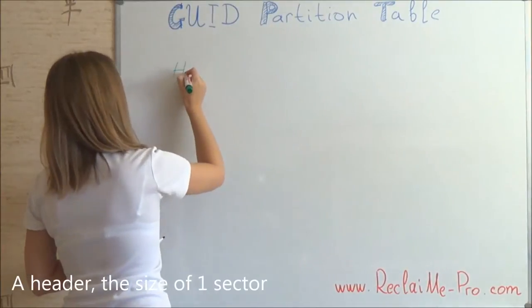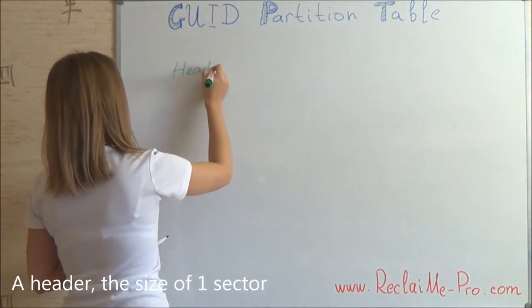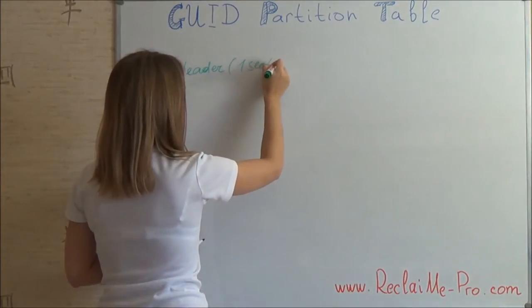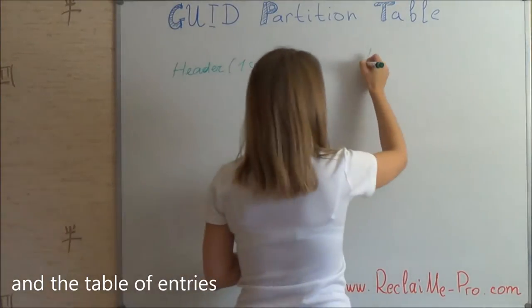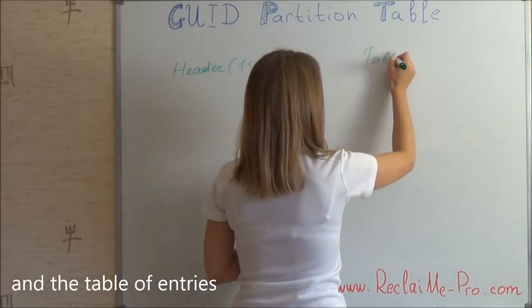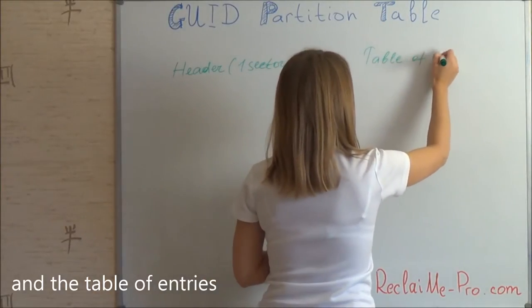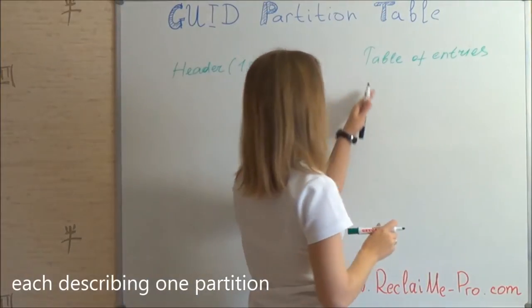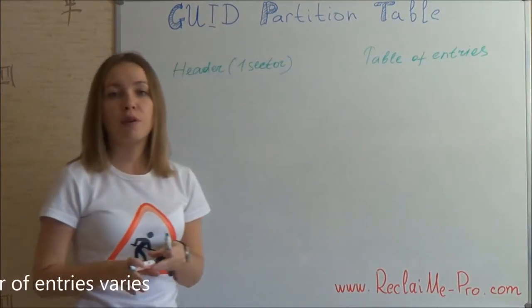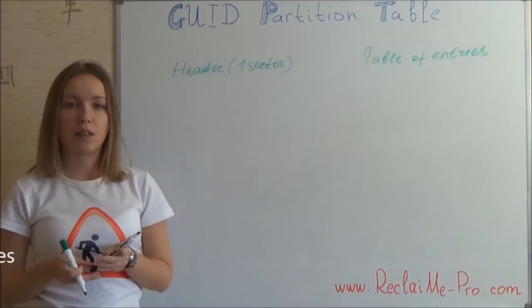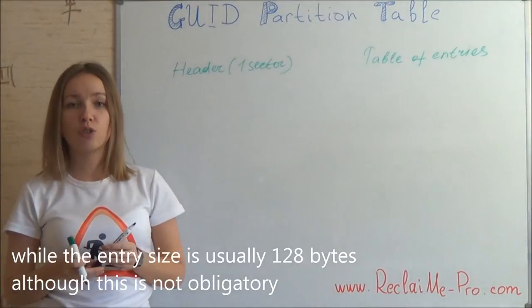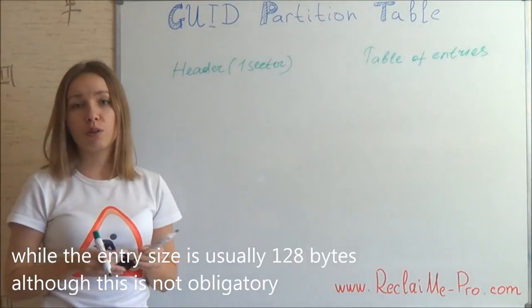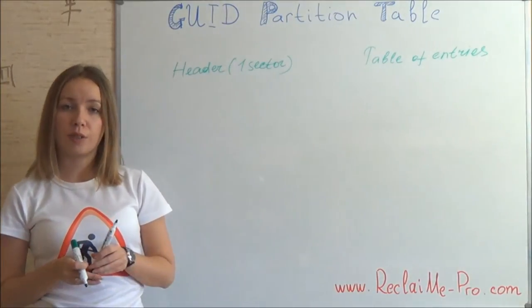GPT consists of a header the size of one sector, and a table of entries each describing one partition. The number of entries varies, while the size of each entry is usually 128 bytes, although this is not obligatory.